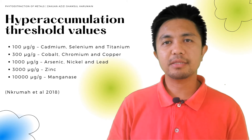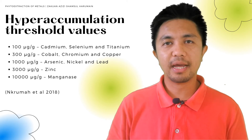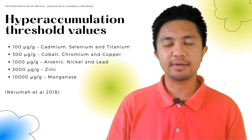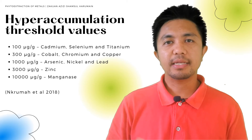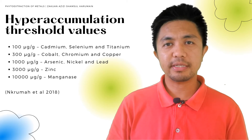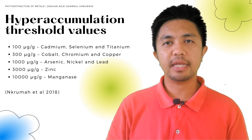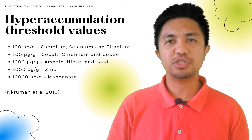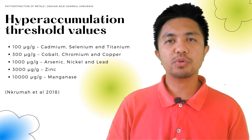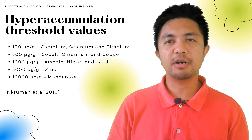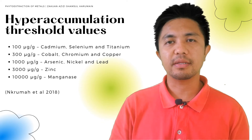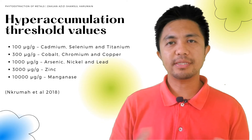In order to classify plants as hyper accumulators, other than being able to accumulate higher concentrations than in the underground tissues, the metal accumulation concentration in the above-ground tissues should also be above a certain level.